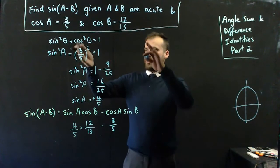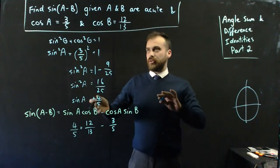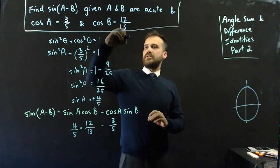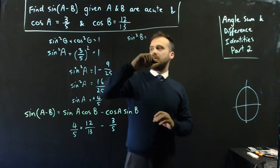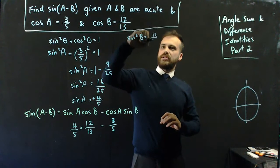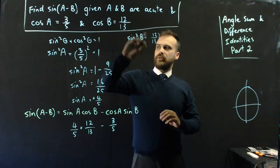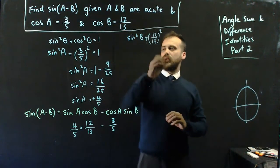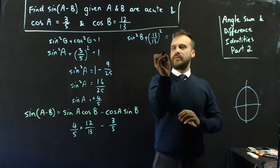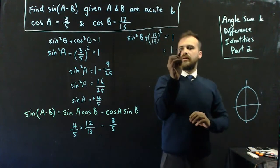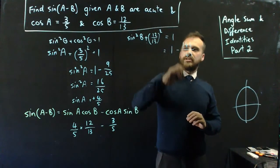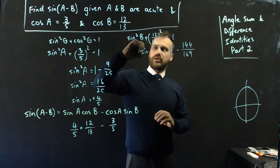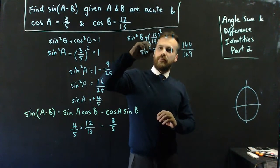And of course, we can do the identical thing with cos b, so we can say that sine squared b plus 12 on 13 squared equals 1. So, we can say that 1 minus 144 on 169 is equal to sine squared b.